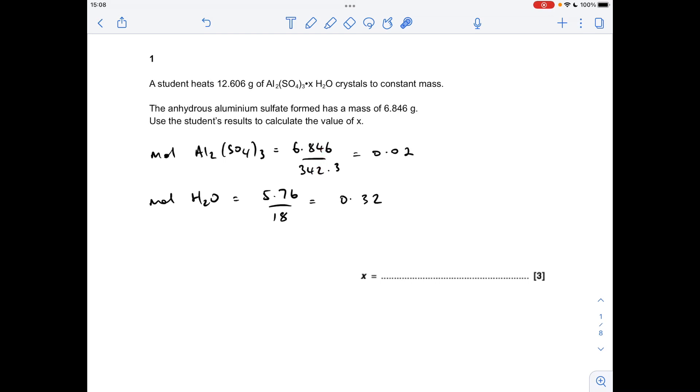So it's two mass over MR calculations to get the moles. The moles of aluminium sulfate, mass over MR is 0.02, moles of H2O is 5.76. That comes from the difference between the total mass of the hydrated salt and the mass of the anhydrous salt formed. To turn that into a simple whole number ratio, we divide the bigger number by the smaller number. It's a 1 to 16 ratio, so X is 16.